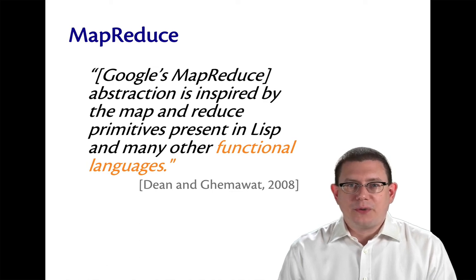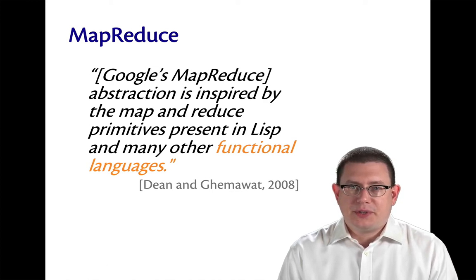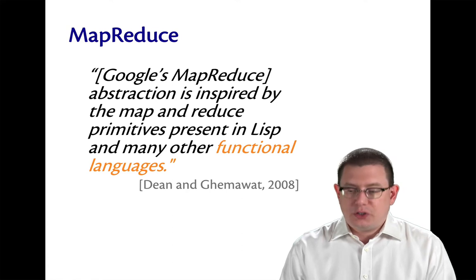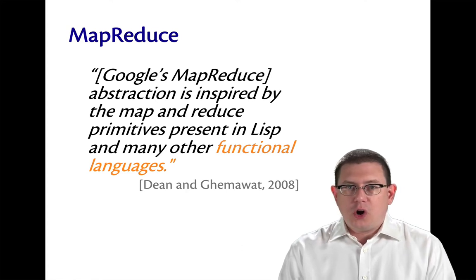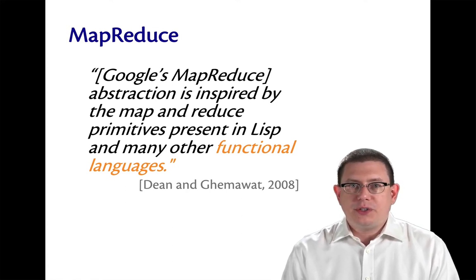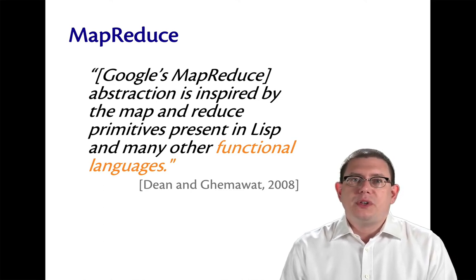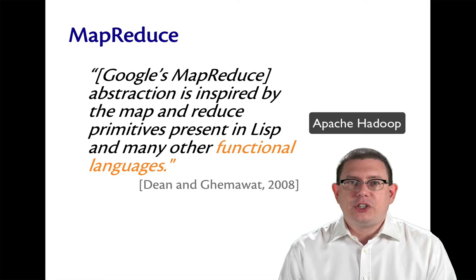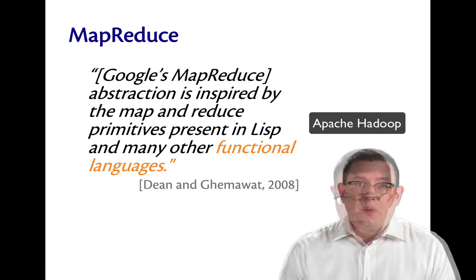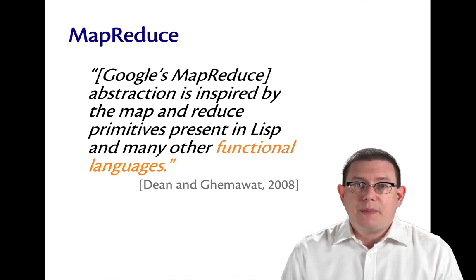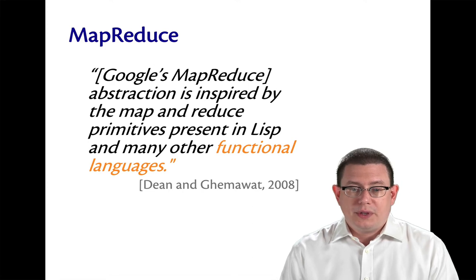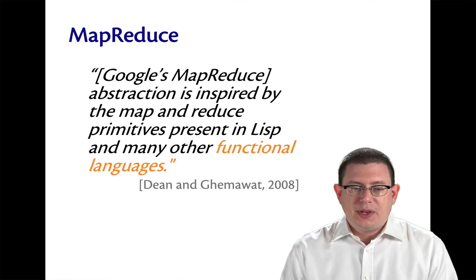Perhaps the most famous higher-order functions are map and reduce. Google made these extremely popular for large-scale data parallel computations in a framework called MapReduce. There's an open-source implementation of this by Apache called Hadoop. In the paper that introduced MapReduce, Google wrote, the abstraction is inspired by the map and reduce primitives present in Lisp and many other functional languages.